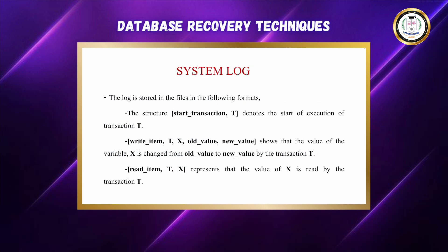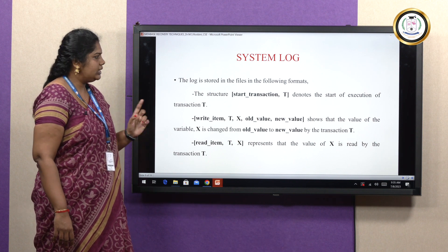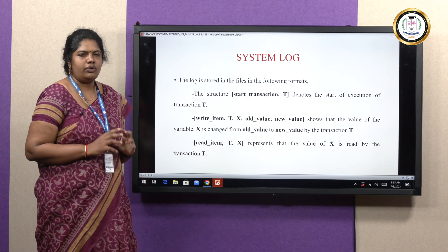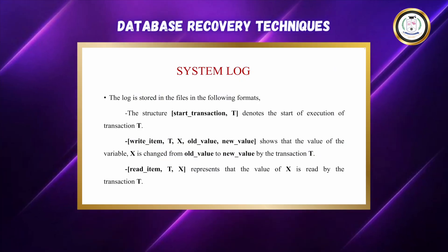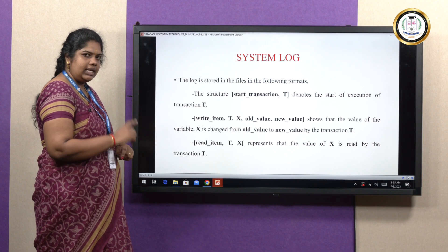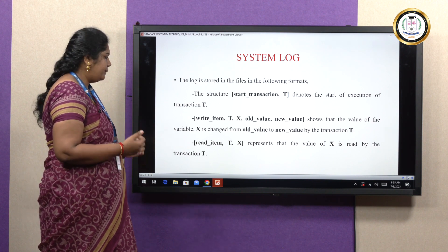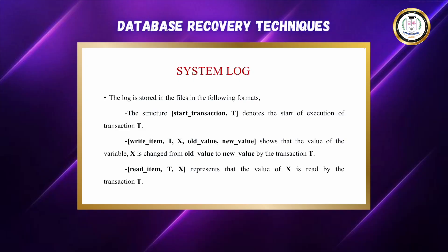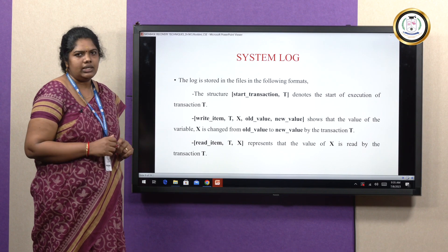The system log files are in the following formats. The first is start_transaction(t), which marks the start of the execution of the transaction. The second is write_item(t, x, old_value, new_value), which shows that the value of variable x is changed from an old state to a new state by the transaction. The next is read_item(t, x), which represents that the value x is read by transaction t.